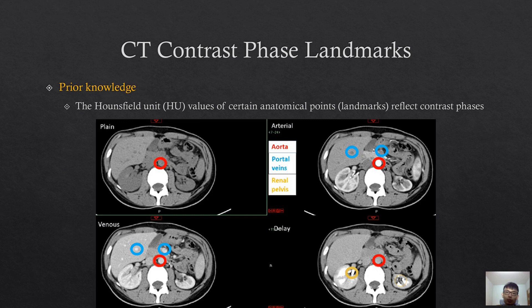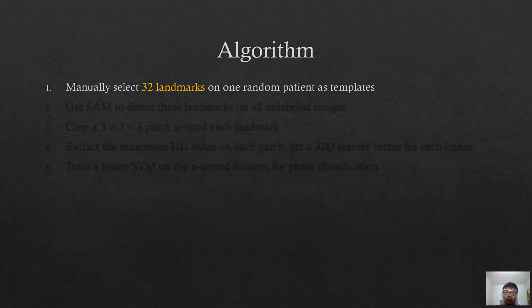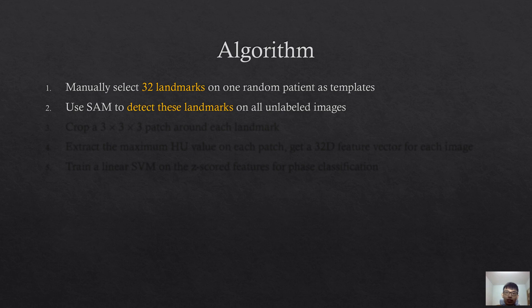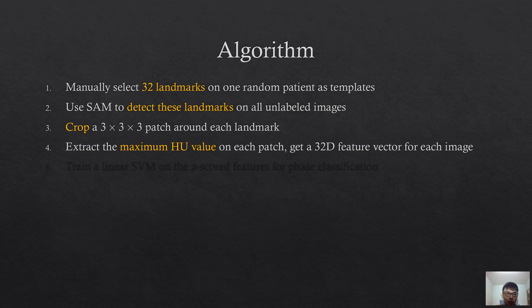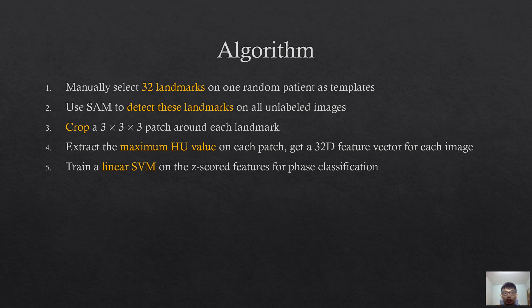In clinical practice, to determine the contrast phase of a CT, radiologists often observe the Hounsfield units of certain anatomical landmarks, such as the aorta, portal vein, and renal pelvis. We propose to leverage this prior knowledge in our algorithm. First, we manually select 32 phase-related landmarks on one random patient as templates. Then, SAM is used to detect these landmarks on all unlabeled images. We crop a small patch around each landmark, and then extract the maximum HU value on this patch to get a 32-dimensional feature vector for each image. Finally, we train a linear SVM on the feature vector for phase classification.